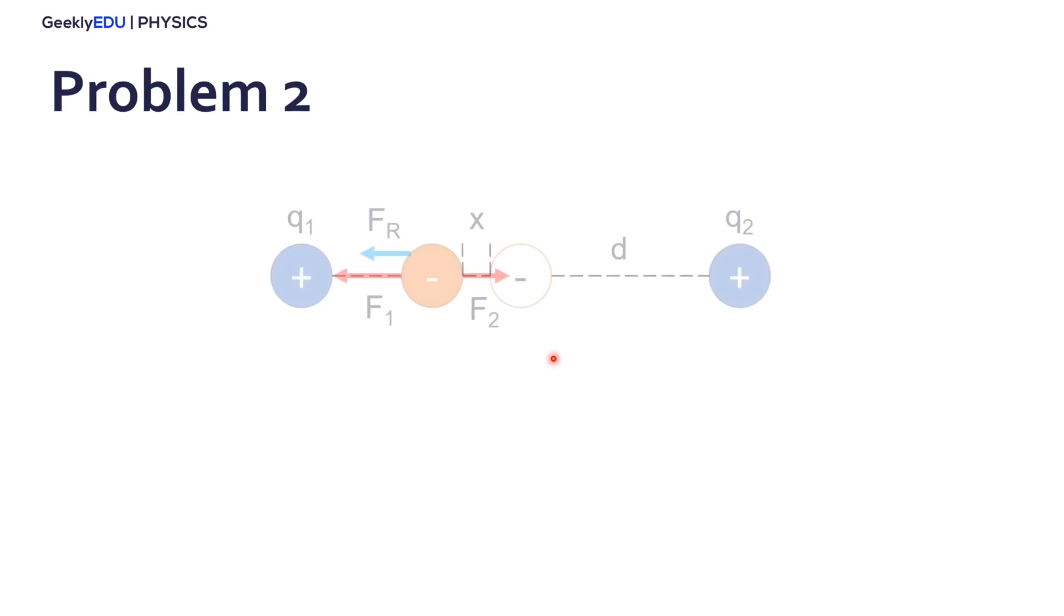Now let's go through the second part. What happens if we move it in the same direction of the segment here? Well, imagine we are moving the particle, the negative particle, a little bit to the left, with this x displacement here.